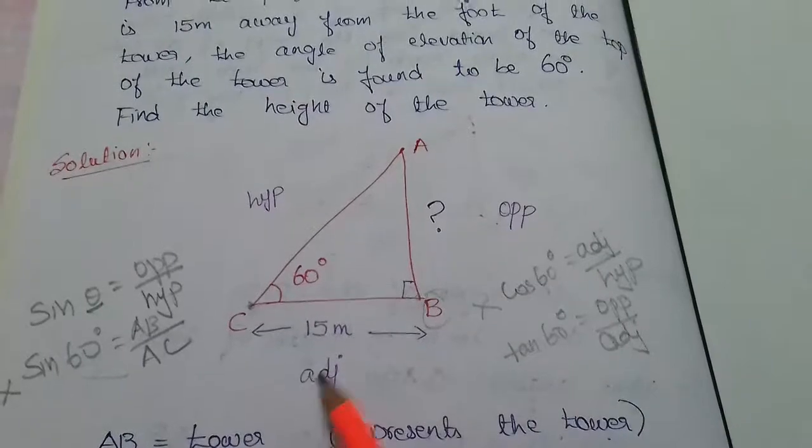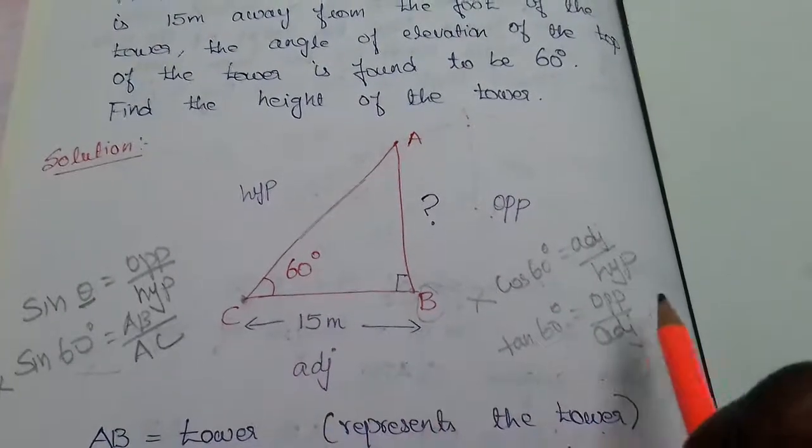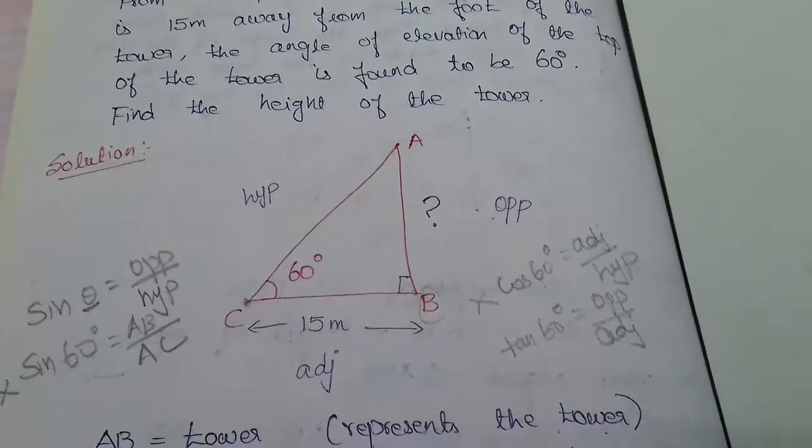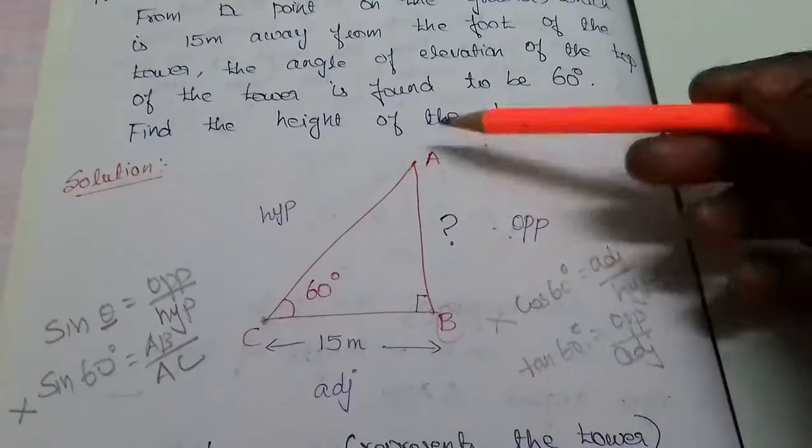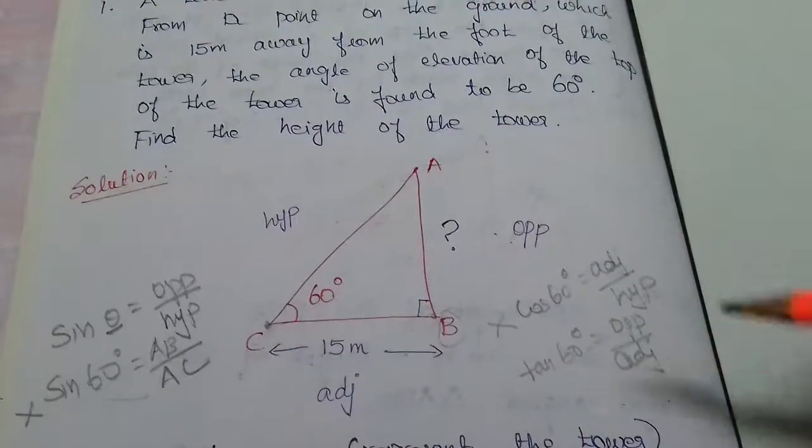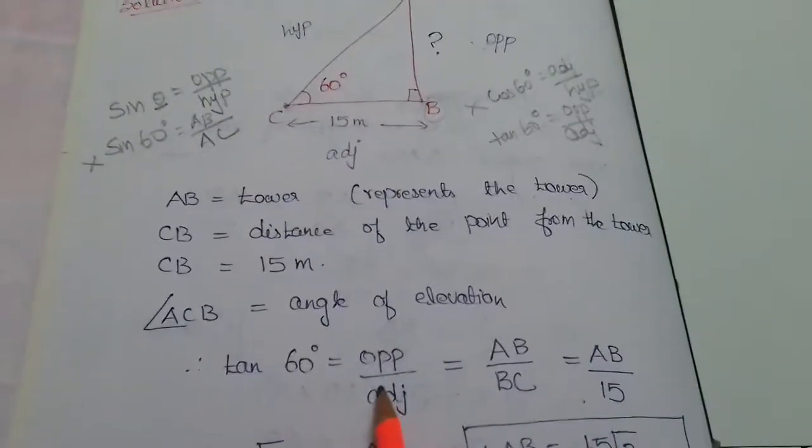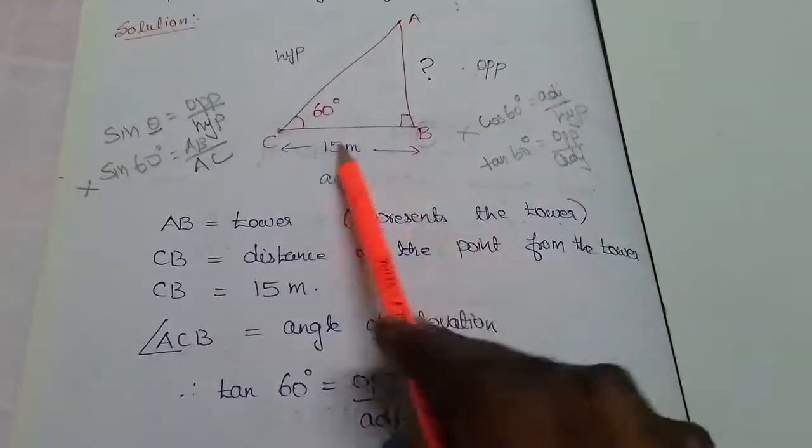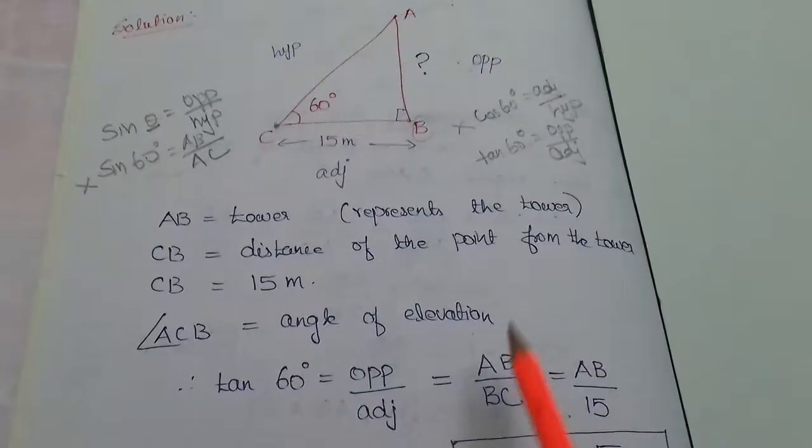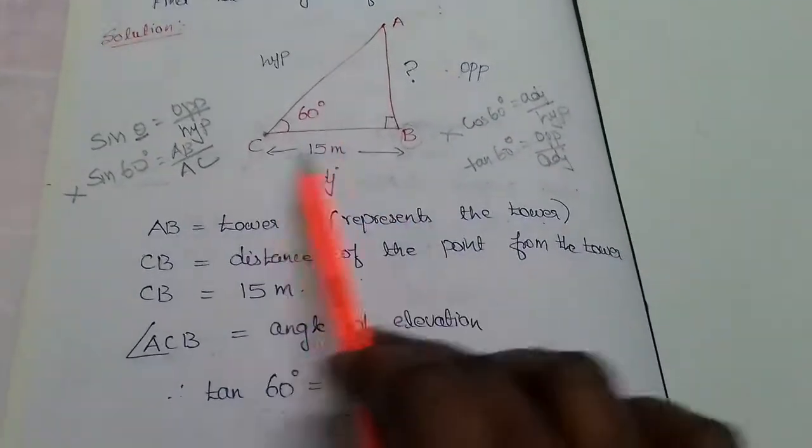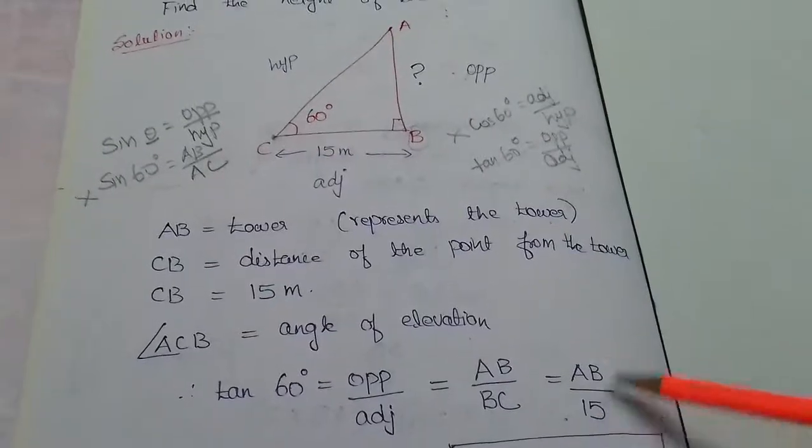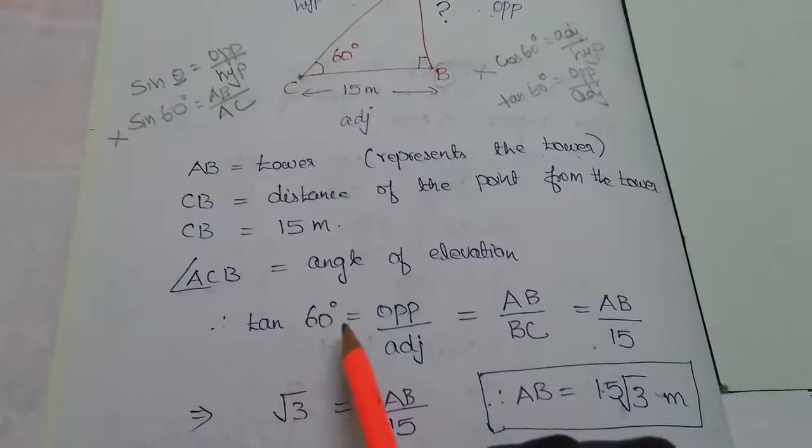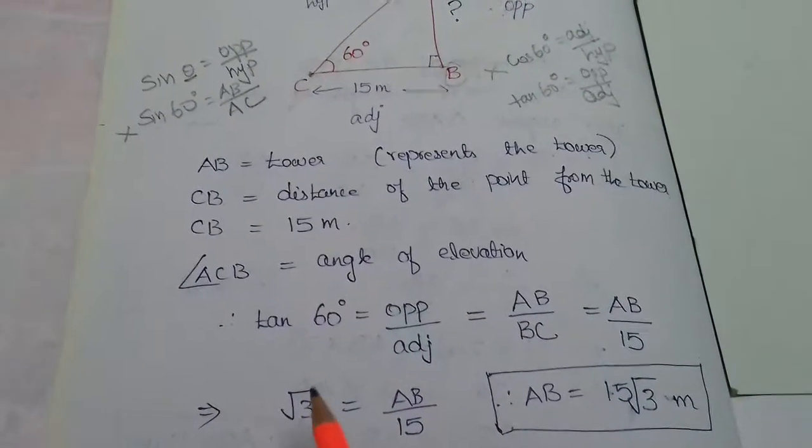Opposite by adjacent. So here adjacent value 15 meters. Tan 60 value substitute. Opposite side, that is height of the tower. So tan 60 degrees is equal to opposite by adjacent, opposite side AB divided by adjacent side BC ground level. That is equal to AB divided by distance from the foot of the tower, 15 meters. So AB divided by 15. So tan values 60 degrees, that is equal to root 3.